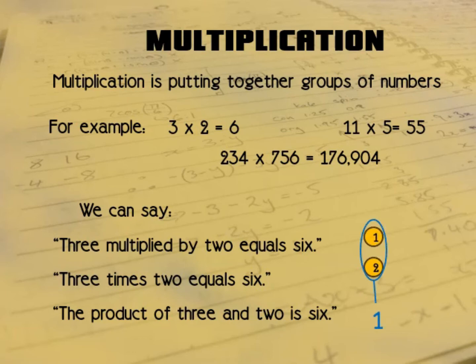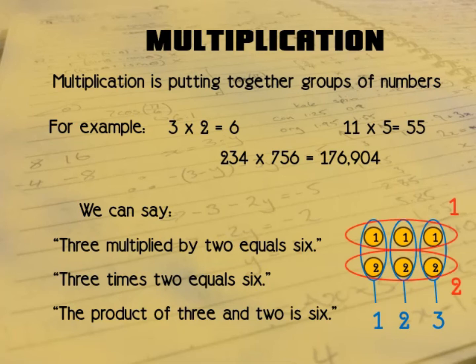Putting together groups of numbers you can see this visually. There is a group of 2 orange balls, another group of 2 orange balls, and a third group of 2 orange balls. So there we have 3 groups of 2 orange balls. How many orange balls do we have? Well we have 6. 3 times 2 is 6, or if you prefer 2 times 3 is 6. Put all the 1's together you've got 3 of those, put all the 2's together you've got 3 of those.